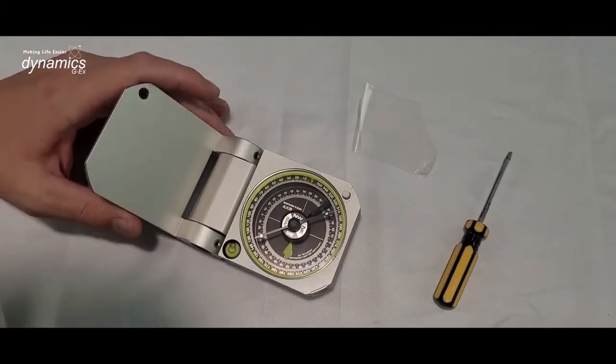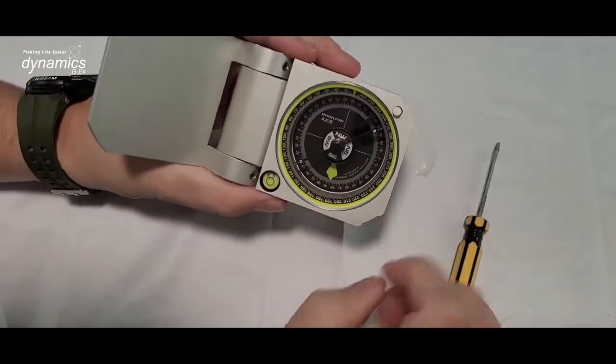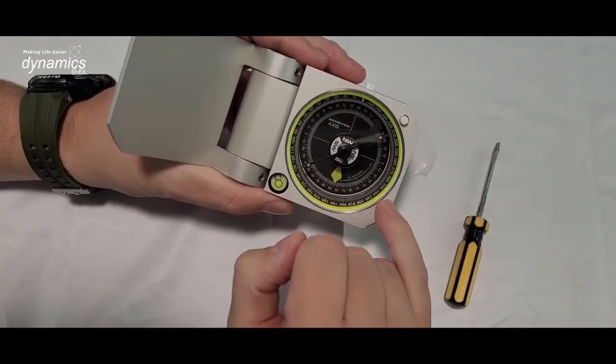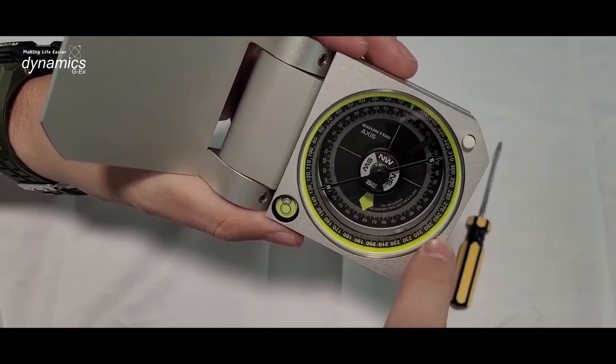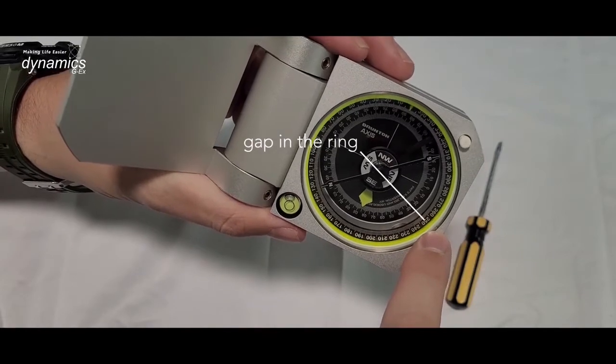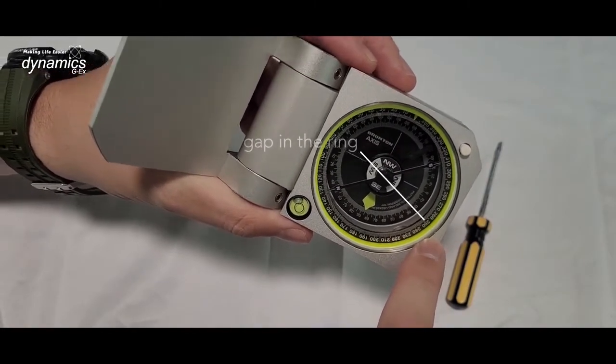Now what we find is these compasses can vary from compass to compass in the hardness to get out the initial part which is this outer metal ring. Some have a gap in the ring here which makes it easier to pry out. So for this demonstration I've picked a difficult one from stock.